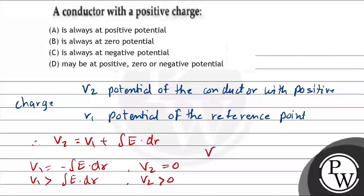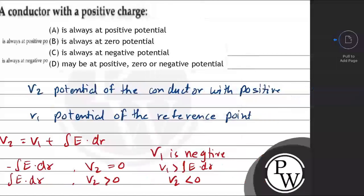And if V1 is negative, but in magnitude it is greater than integral E dot dR, then V2 will be less than 0.